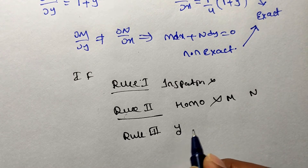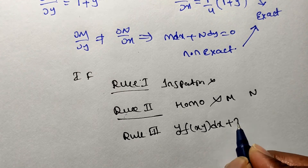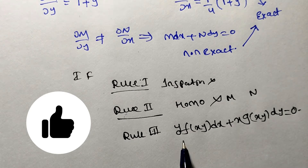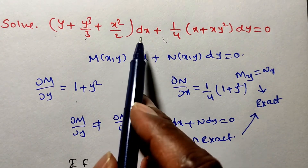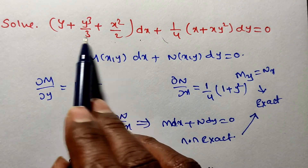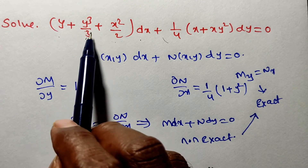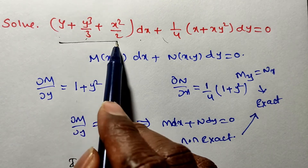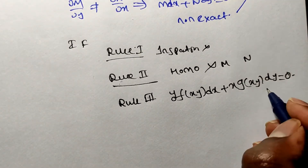Go for Rule 3: the form y·f(x,y)dx + x·g(x,y)dy = 0. If we take y as common from the dx term, we need an xy product. From the dx terms, we can get y, but the remaining piece gives y², not x²y². So we cannot take y as a common factor. Rule 3 is also not applicable.